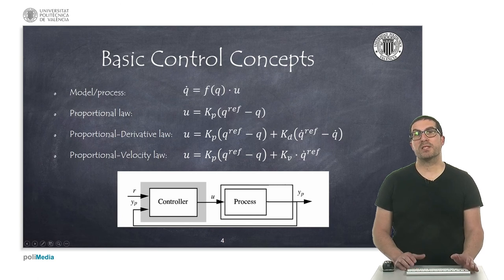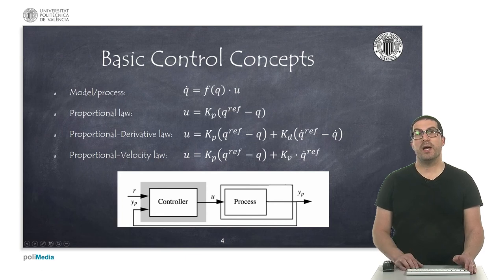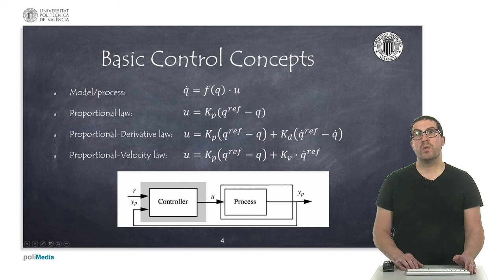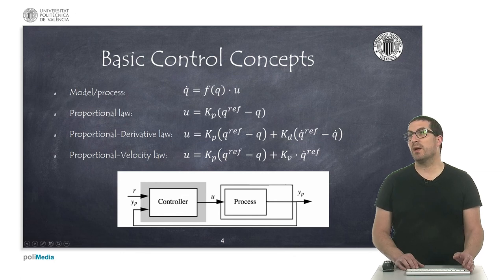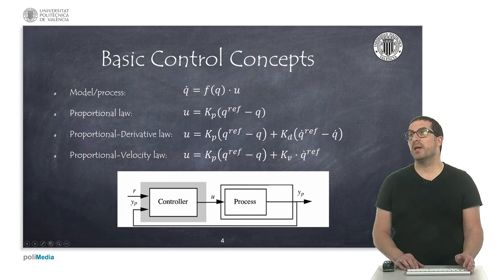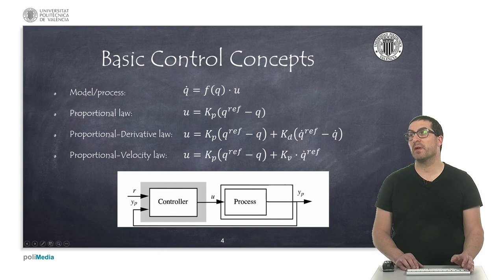Here I show three basic examples of control loops found classically in the literature. On the one hand, there is a proportional controller — P-control — which states that the wheel speeds are proportional to the error between the reference configuration and the robot configuration. A PD control includes a derivative term that basically also includes the speed error. Finally, proportional velocity control has an advantage over proportional derivative because we do not need to obtain the derivatives of the configuration.